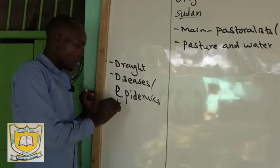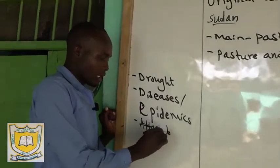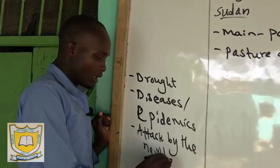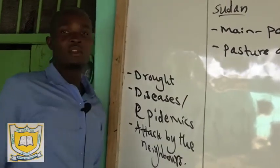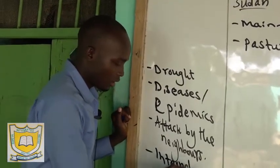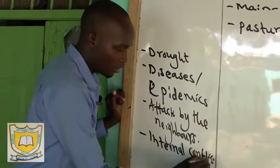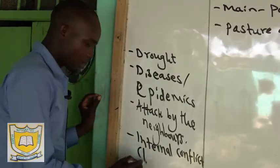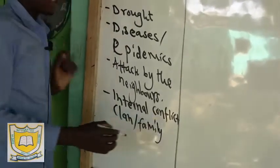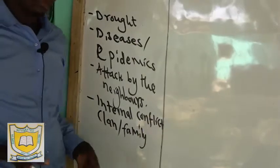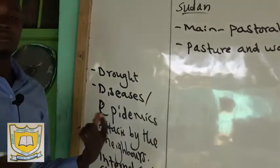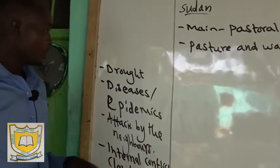Attack by neighbors also made these people migrate. Then we have internal conflict — meaning clan conflict within families. These people had issues within their families and clans, which made them migrate to other areas where they could settle well with their children.